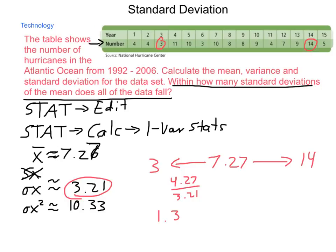Going the other way, 14 minus 7.27 is 6.73 divided by the 3.21 will give us a total of 2.10 when we round standard deviations.